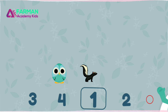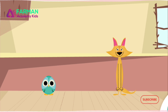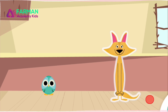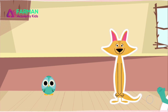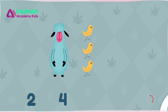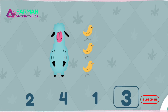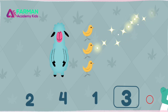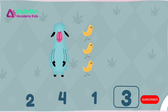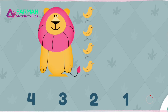How many birds tall is the sheep? Tap three. The sheep is as tall as three birds. Tap the number of birds that add up to the lion's height. Four. The lion is as tall as four birds. Which friend is taller? The lion is as tall as four birds, and the sheep is as tall as three birds.